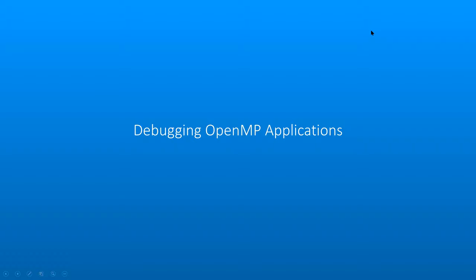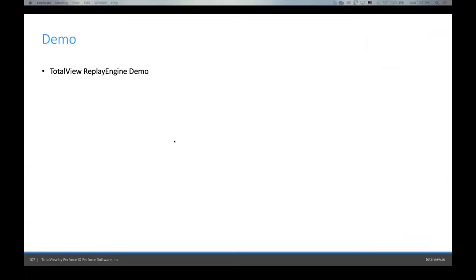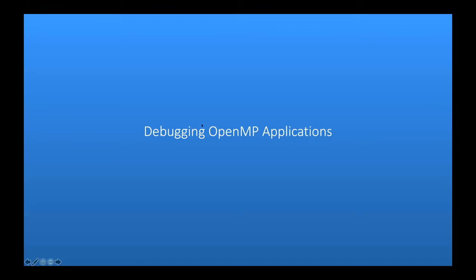I create a Replay Engine bookmark called 'error location', which appears in the replay engine bookmarks tab. Running backwards, we hit the first breakpoint. To return to the error location, I double-click the bookmark and it takes me right back. Finally, clicking save allows me to save the recording to disk and share it with others or come back to it later.